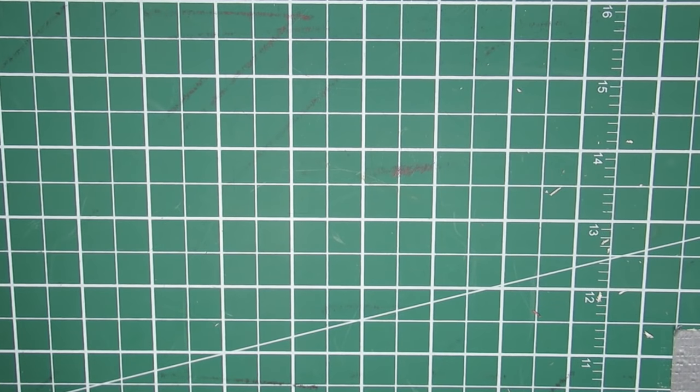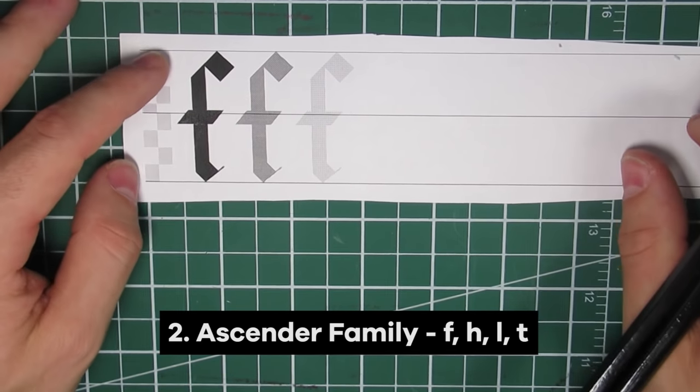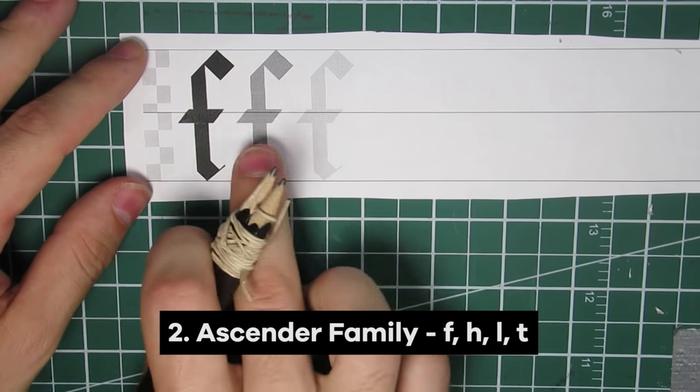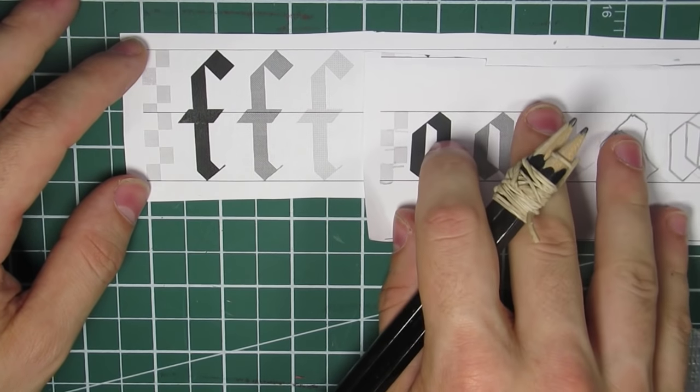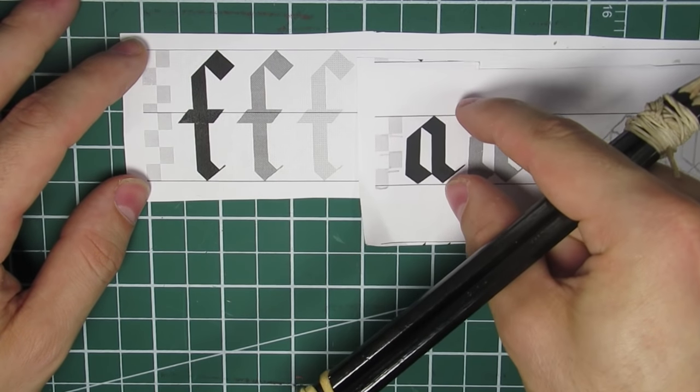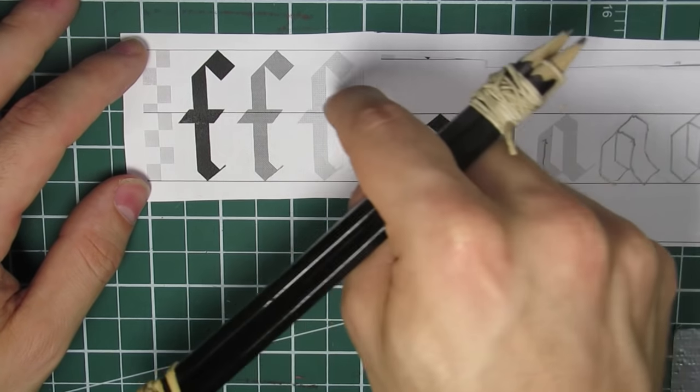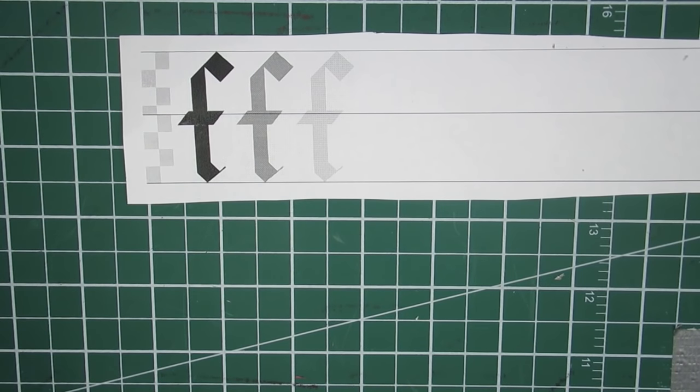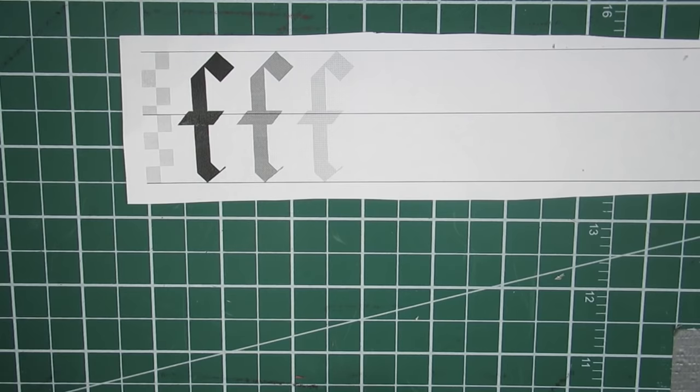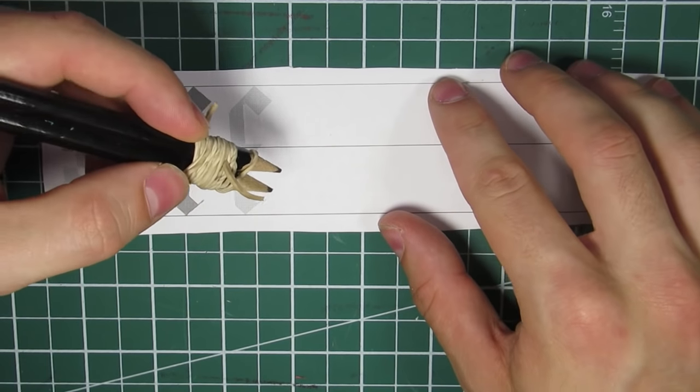So the next family is the ascender. The ascender is any letter that goes above your base height, above this line here. F is one of them. L is simpler, but we're going to try to do a more complex letter.